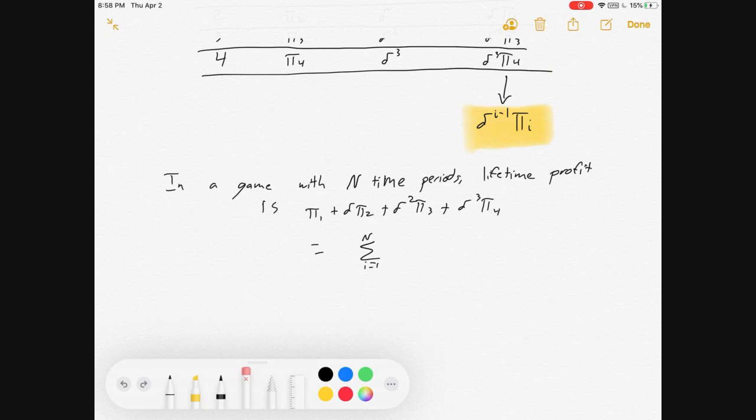Which is sum from i equals 1 to n, times δ^(i-1) times πi. That will add all of the present valued profits for the entire game.